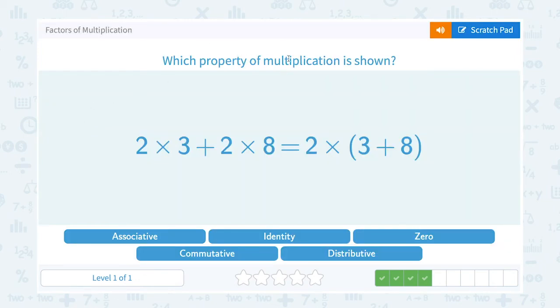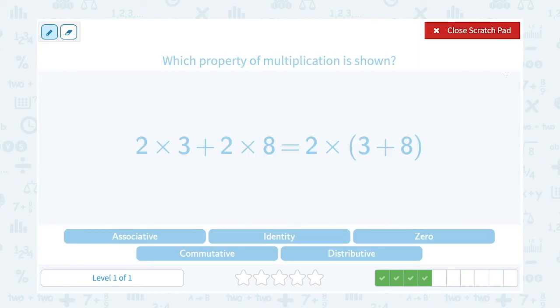Which property of multiplication is shown? 2 times 3 plus 2 times 8 is equal to 2 times the quantity 3 plus 8. So let's take a look at what they did here. When we're multiplying a number times something in a parenthesis—when we have two numbers either added or subtracted in the parenthesis—we would distribute.